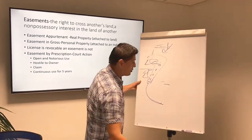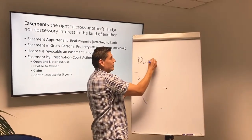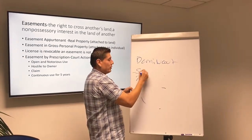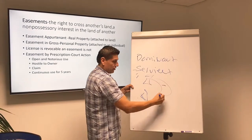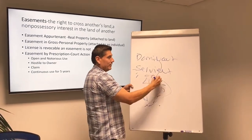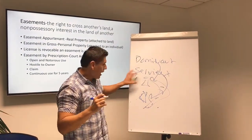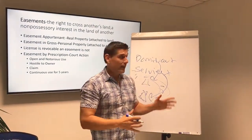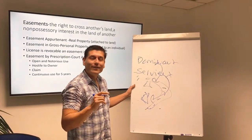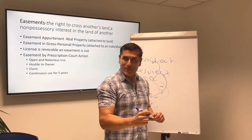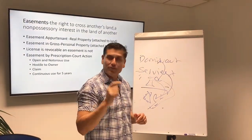A couple of other things to clarify: the property that benefits from the easement is called the dominant tenement. The property that has to put up with it is called the servient tenement. So if you're the house that gets to cross the other house's property, you're the dominant. The one being crossed is the servient. On the state exam, it might say that the property benefited from the easement is called dominant, and the property that has to allow crossing is the servient property.